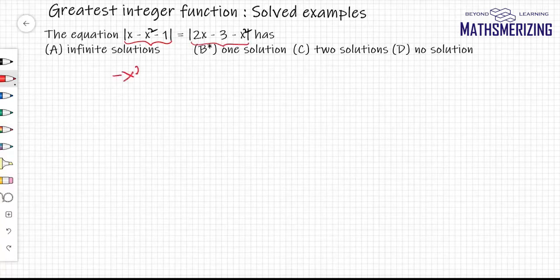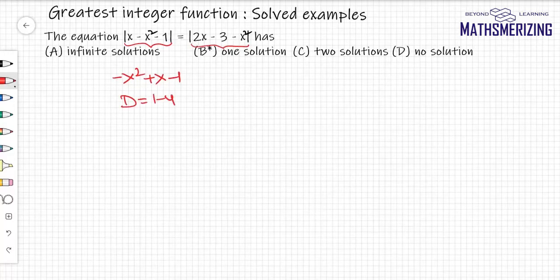So I look at minus x squared plus x minus 1. Now the value of d for this is less than 0. So d less than 0 and a less than 0.